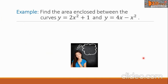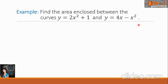Let us have an example. Find the area enclosed between the curves y equals 2x squared plus 1, and y equals 4x minus x squared. This is step 1, that is to find the limits a and b.